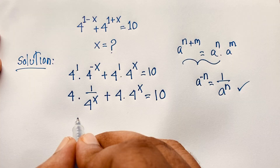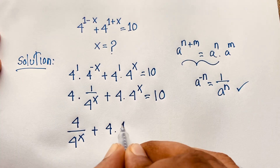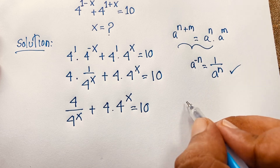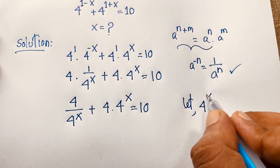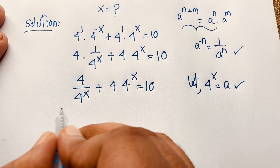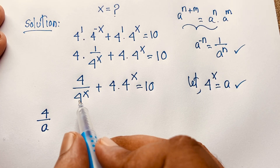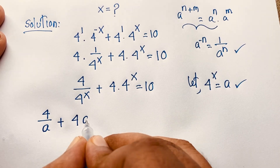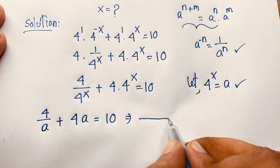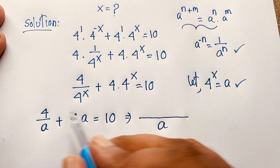Multiplying through by 4, we have: 4 over 4^x plus 4 times 4^x is equal to 10. Now at this moment, let 4 to the power x equal a. So substituting, we get 4 over a plus 4a is equal to 10. The least common denominator is a.